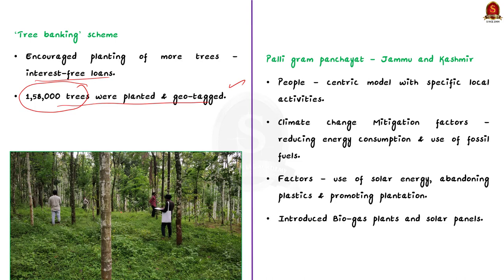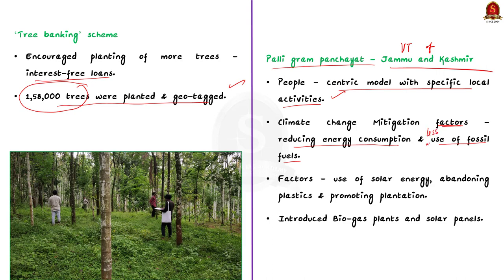There is also another example: the Palli Gram Panchayat in the Union Territory of Jammu and Kashmir. Palli followed a people-centric model with specific local activities. The Panchayat prepared a climate-resilient plan making villages aware of climate change mitigation factors, including reducing energy consumption, cutting down use of fossil fuels, increasing solar energy usage, and abandoning plastic use. The Palli Gram Panchayat also introduced biogas plants and solar panels, with a big solar plant installed to power nearly 340 households.